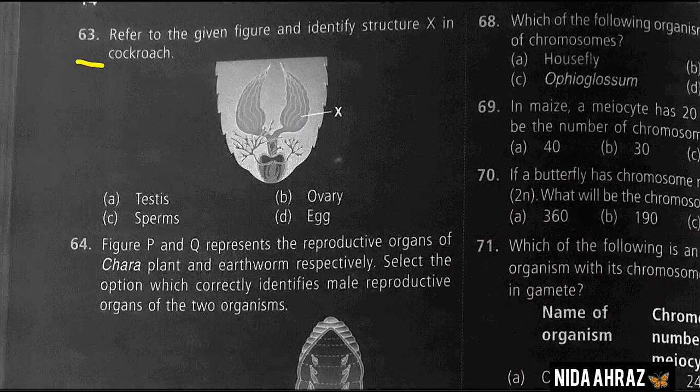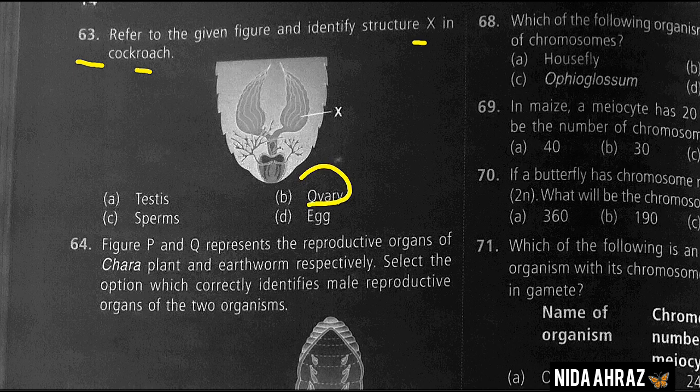Referring to the given figure to identify structure X in cockroach: the given figure is of the reproductive system of a female cockroach, and X is identified as the ovary. Option B is the correct choice.